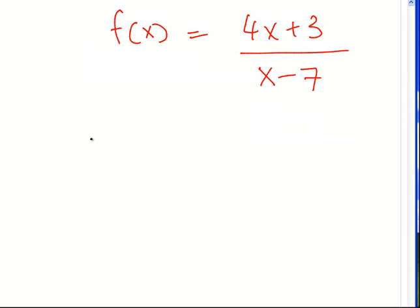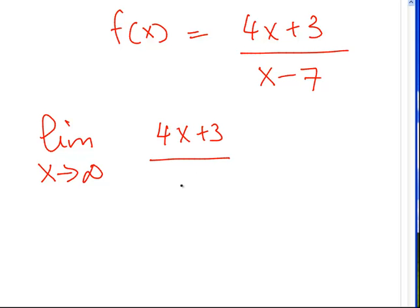Divide down by the highest power. Limit of that. Limit as x approaches infinity of 4x plus 3 over x minus 7. Highest power is x. So, we have 4 plus 3 over x, 1 minus 7 over x.